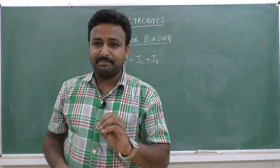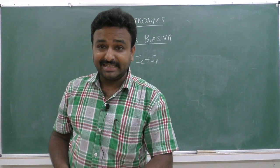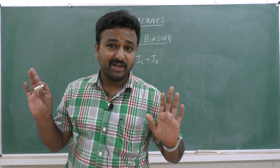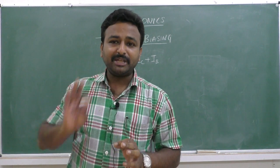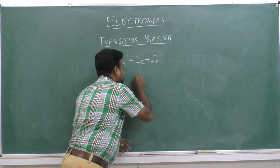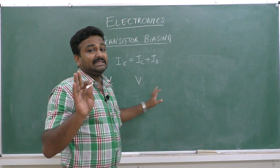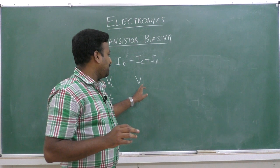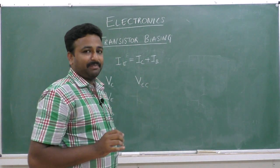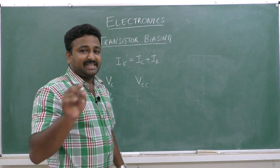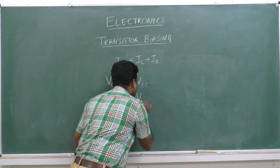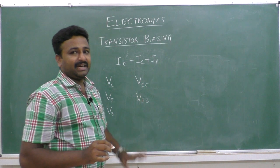If a power supply is connected to the collector region of the transistor, we represent that supply voltage in the circuit as VCC. Similarly, if a power supply is connected to the base region of the transistor, we represent it as VBB in the circuit diagram.